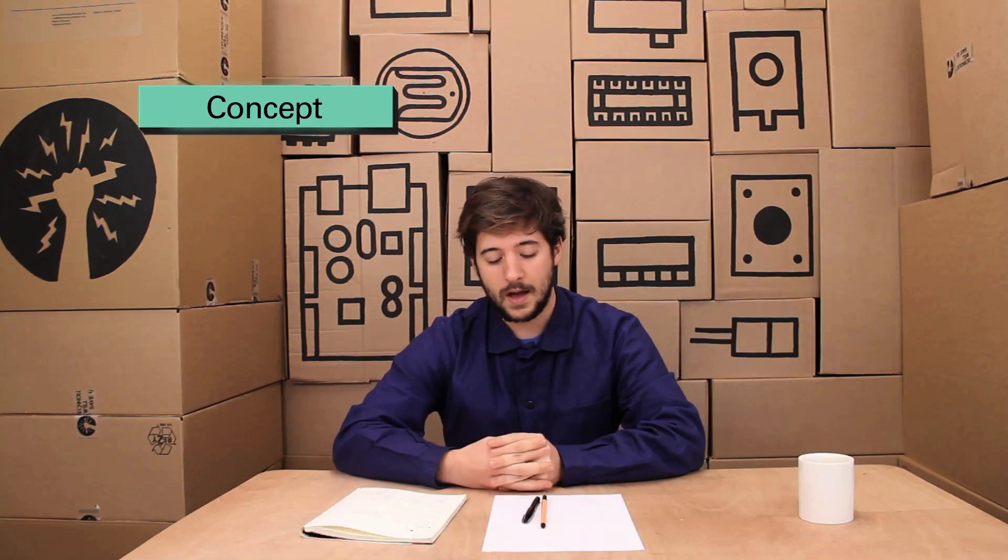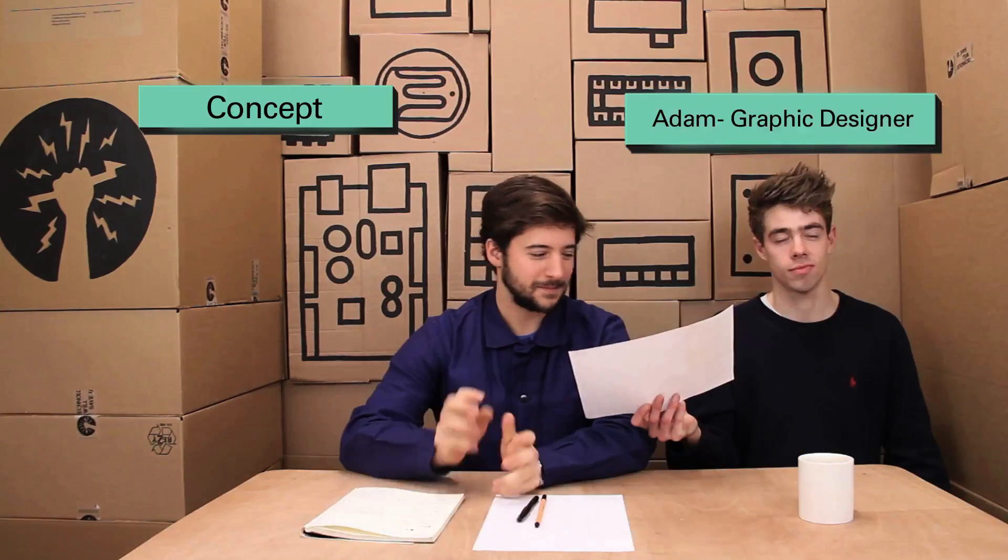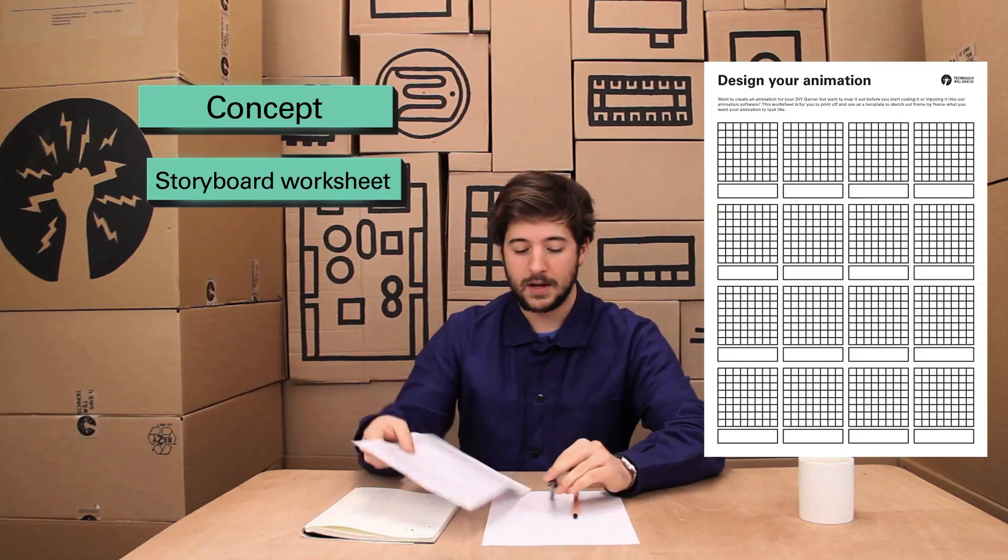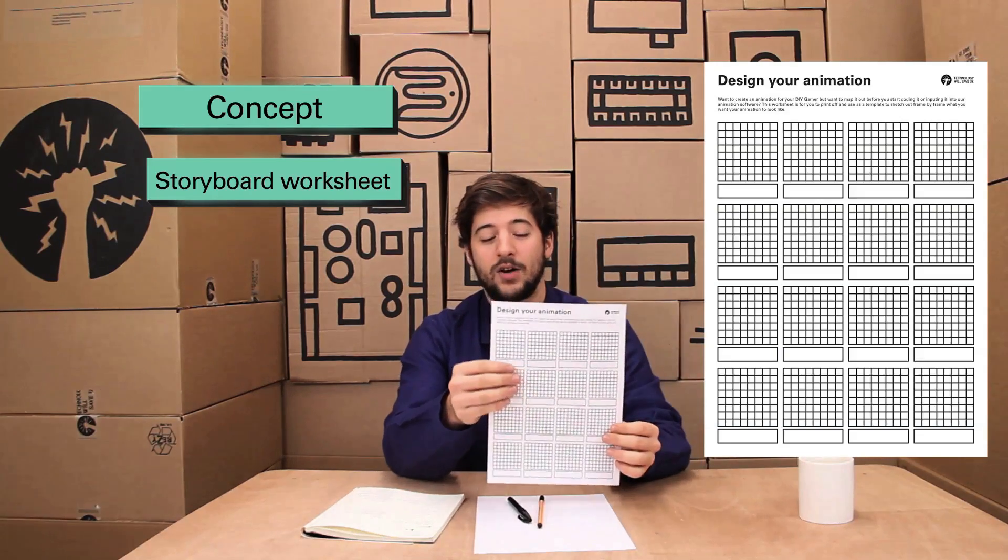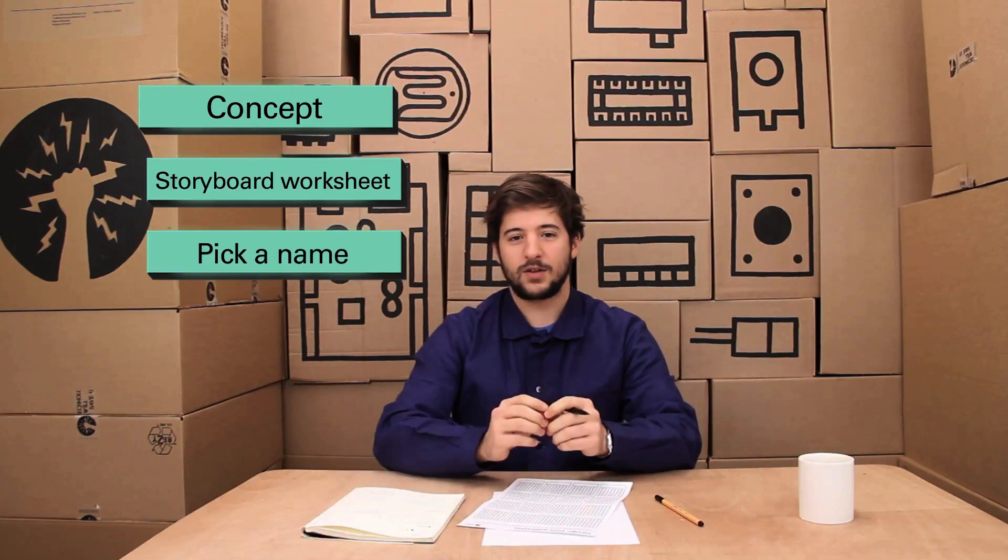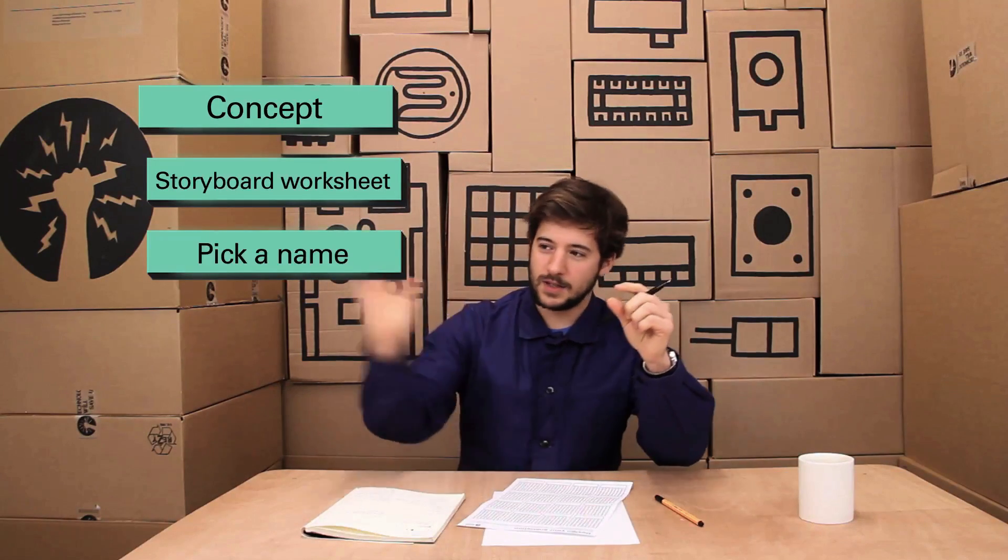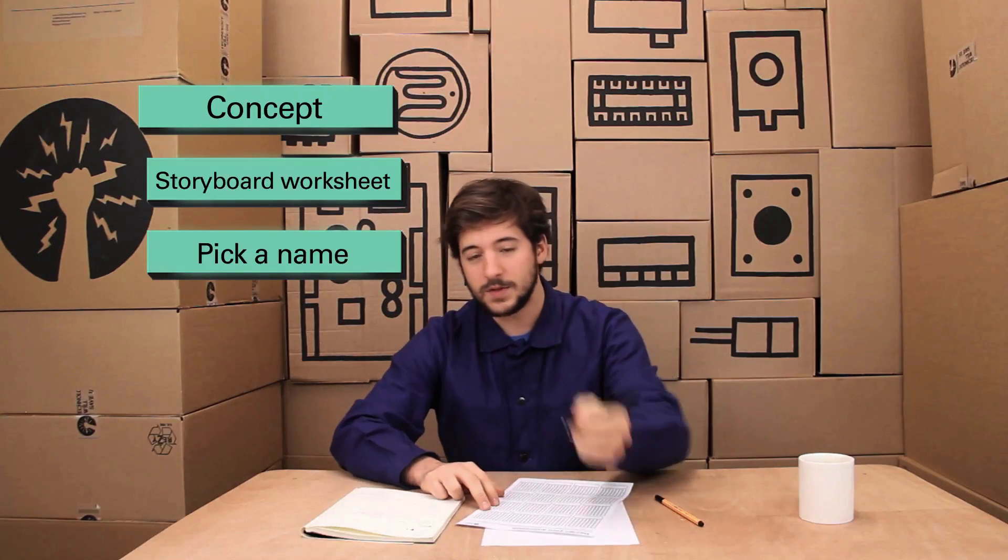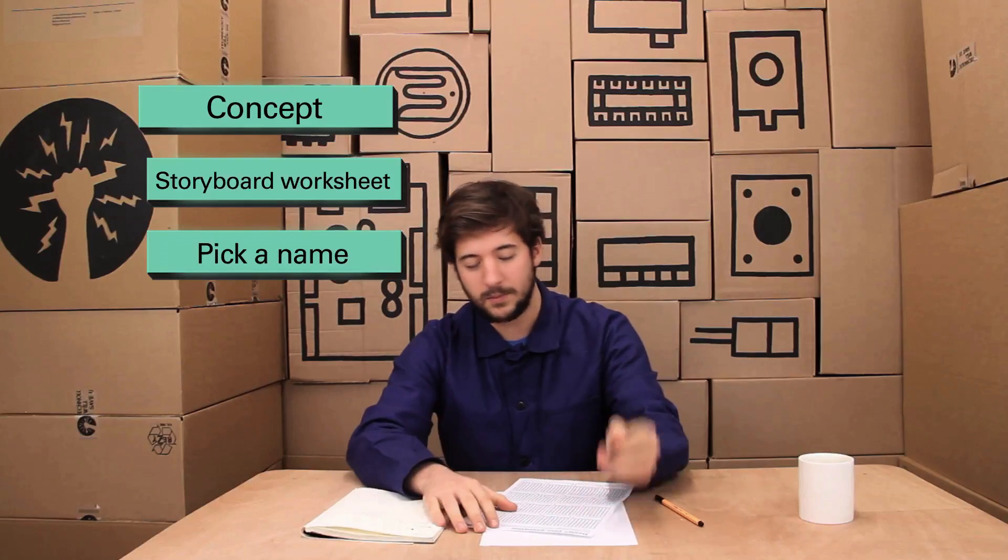The first thing we're going to do is come up with a concept for our game. I've got some blank panels, just a simple storyboard so we can actually start sketching out our game. You can download this sheet online on our resources page. My game is called Dodge. Basically you're a spaceship and there's loads of walls coming at you and you have to dodge them, but you can also break them with some firepower.